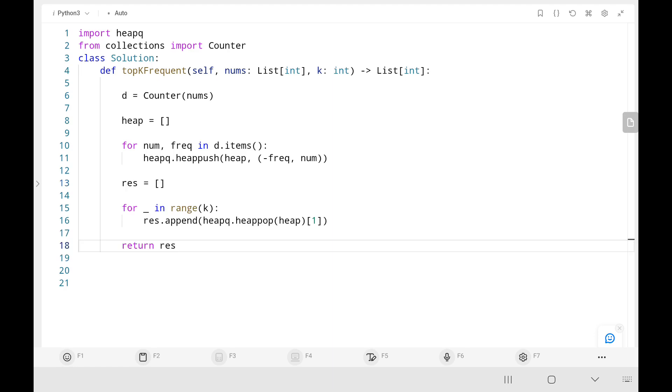Then I will be creating a result list. Then I will be running a loop where I will run the loop for k times where I will get the top k frequently repeated elements by popping it from the heap list. Then I will append that particular values to the result list. Then finally, I will return result.